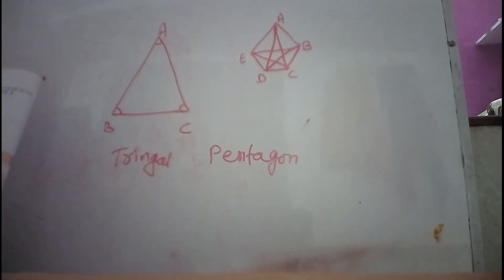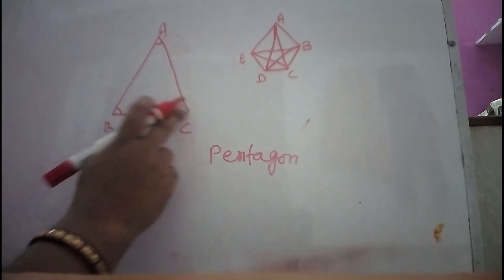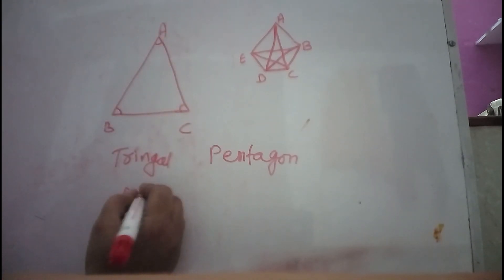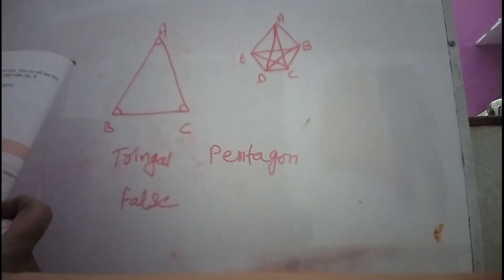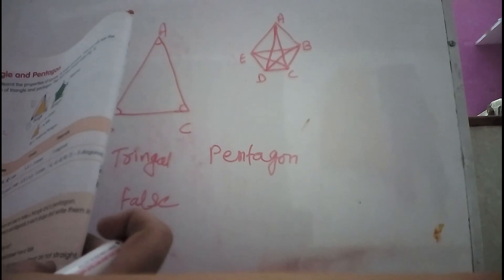On page number 48 you have a question — true or false. All sides of a triangle are equal: no, all sides of a triangle are not necessarily equal. All sides of a pentagon are not straight: false, all sides of a pentagon are straight.